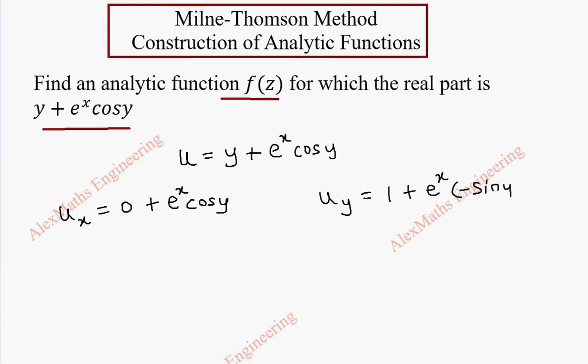Now we're going to find u_x(z, 0). Wherever x is, we replace it with z, and y we replace with 0. cos 0 is 1, so this is e^z.